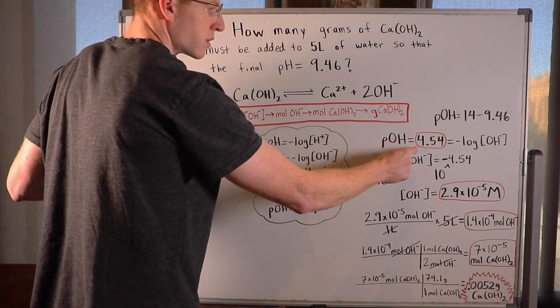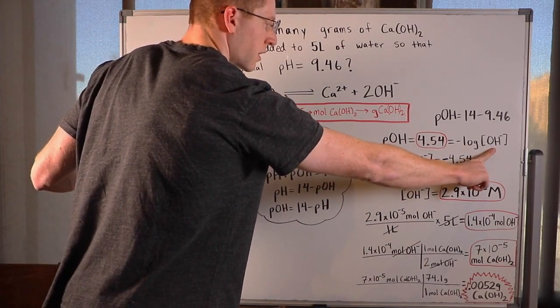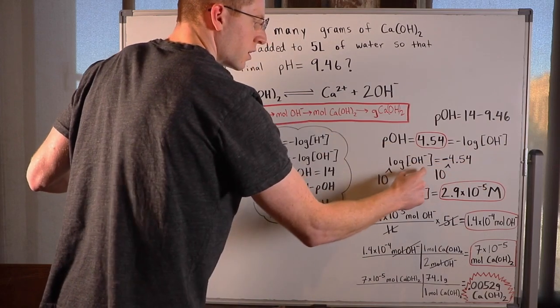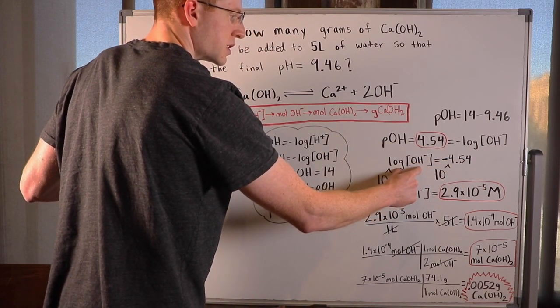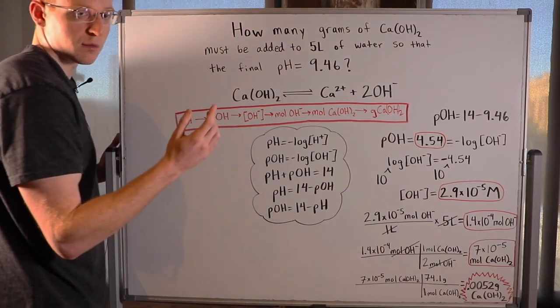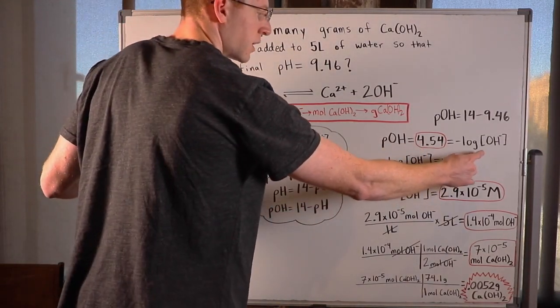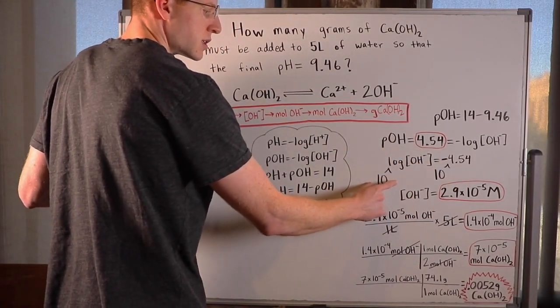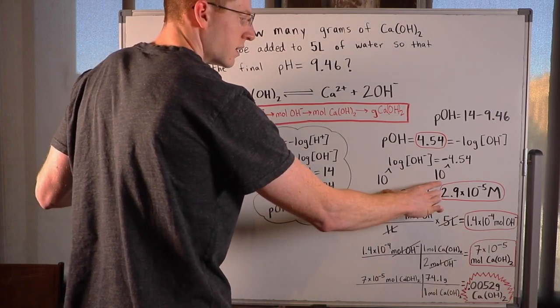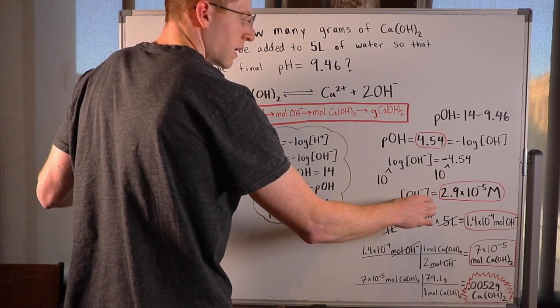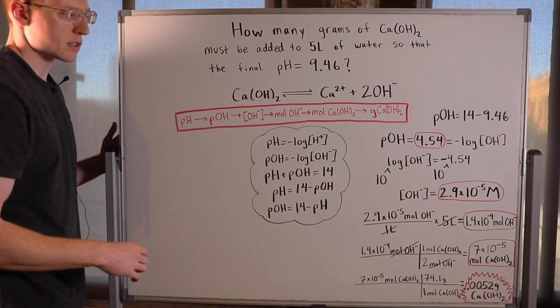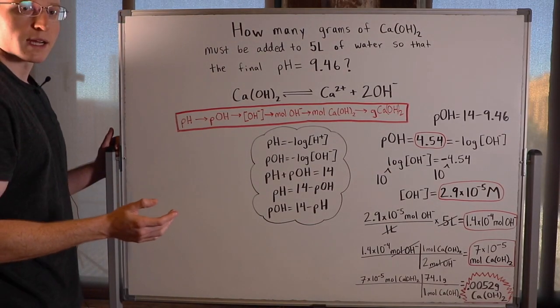So we know pOH is equal to the negative log of the hydroxide concentration. So I said log of the hydroxide concentration is equal to negative 4.54, multiplied both sides by negative 1. Then to undo this logarithm, I did 10 to both sides, and I was able to isolate the hydroxide concentration as 2.9 times 10 to the negative 5 molar.